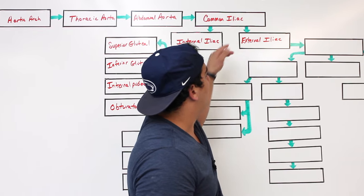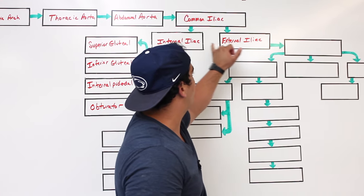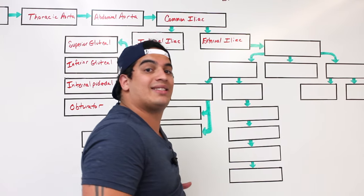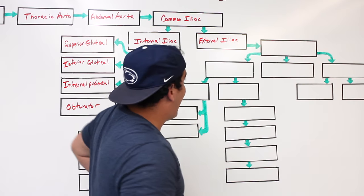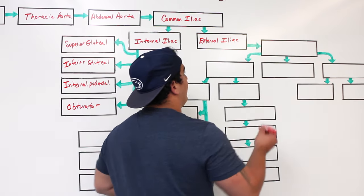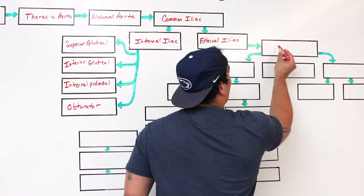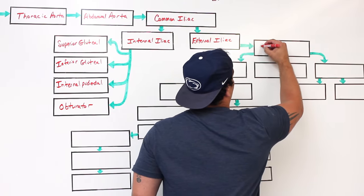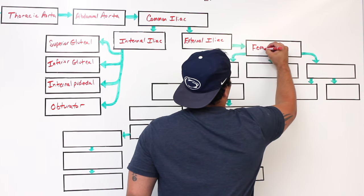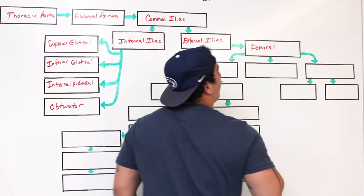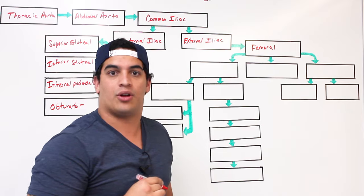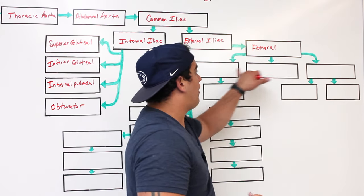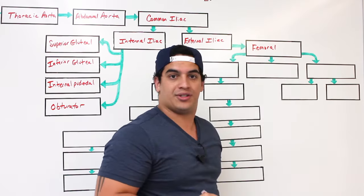The external iliac — the other branch of the common iliac — starts progressing down the leg. As it descends, it becomes the next structure: the femoral artery.